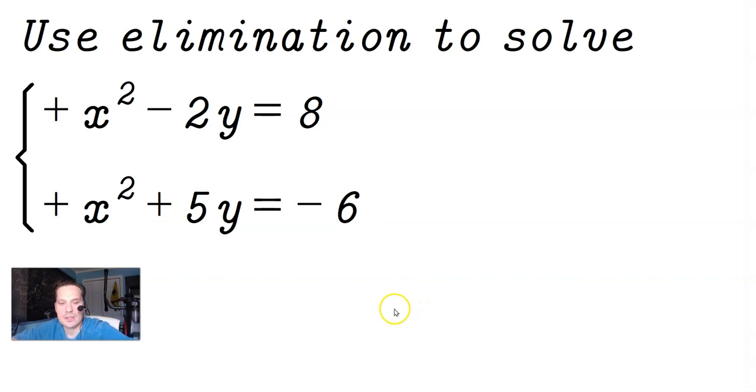Welcome friends, let's solve this system using elimination, so x squared minus 2y equals 8 and x squared plus 5y equals negative 6.